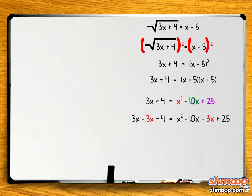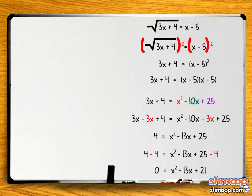Subtract 3x from both sides, and 4 from both sides. And we get 0 equals x squared minus 13x plus 21.